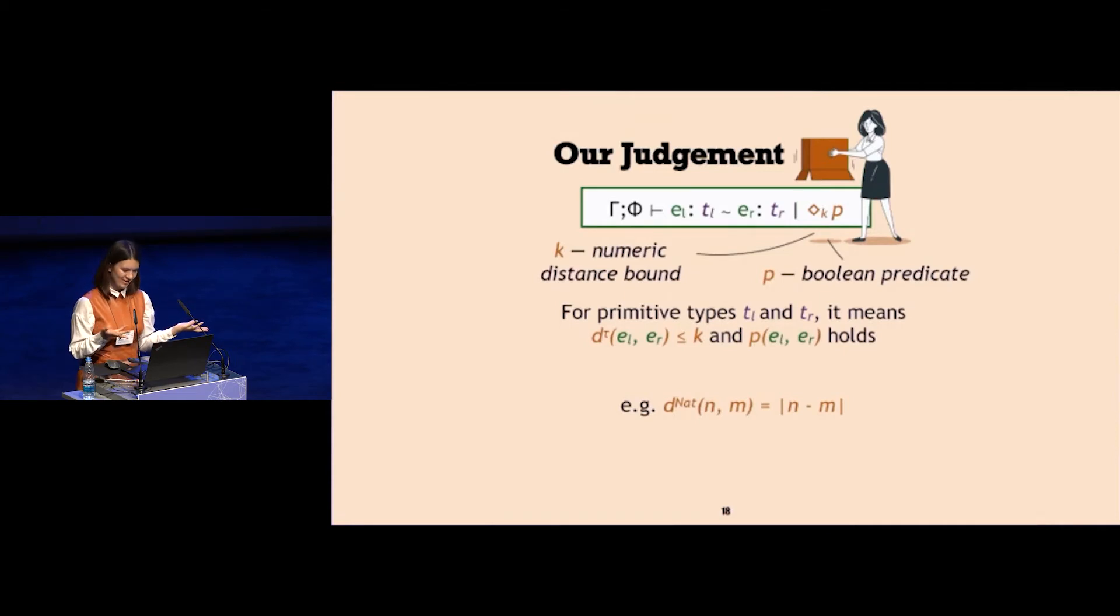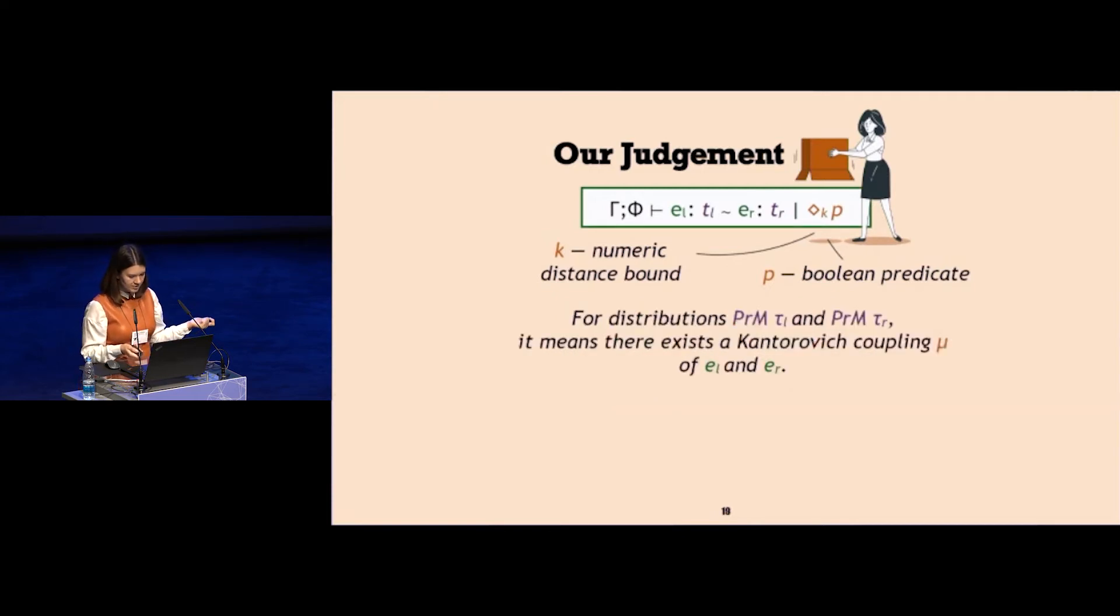For example, for numeric types, for primitive which includes numeric, I require that there is a distance function. In this example, distance of natural numbers is absolute value of the difference between two natural numbers. The meaning of the judgment is that this distance should be less or equal to numeric bound k, and also the predicate, which is a Haskell boolean expression, should evaluate to true, which we check statically.